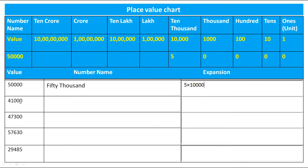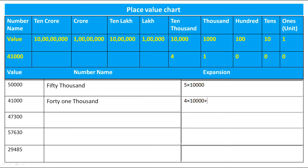The next number is 41,000. Let's put this in the place value chart. 4 is on the 10,000 place, 1 is on the 1,000 place, and the remaining zeros are on 100, 10s, and unit place. So the number name is forty-one thousand. The expansion is 4 × 10,000 + 1 × 1,000.